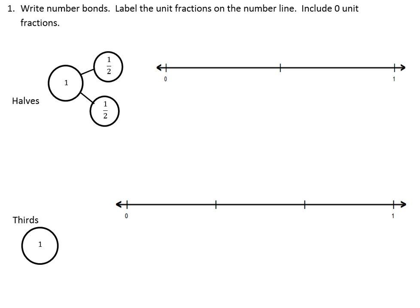The first question shows me one whole in my number bond, and it is made up of two halves. We're going to show those halves on the number line. We'll start by saying we have zero halves at the zero point on the number line.